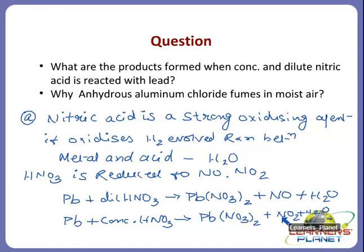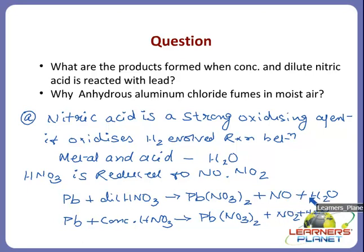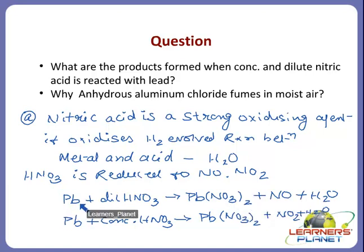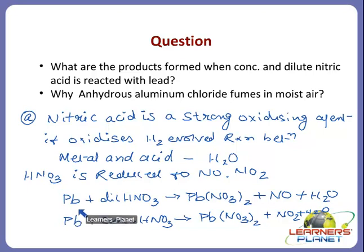NO2 is formed with concentrated acid and NO is formed with dilute acid. The salt is always formed along with NO or NO2 depending on the concentration. Hydrogen is evolved only with very, very dilute nitric acid. For example, if there is copper in place of lead, it forms copper nitrate, nitrogen monoxide and water. If there is iron, it forms iron nitrate, nitrogen monoxide and water.